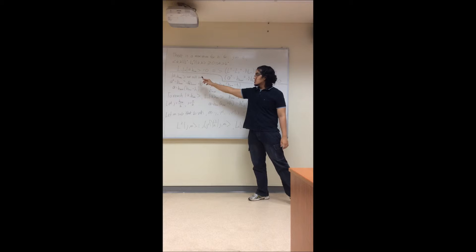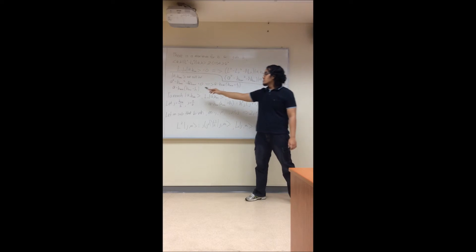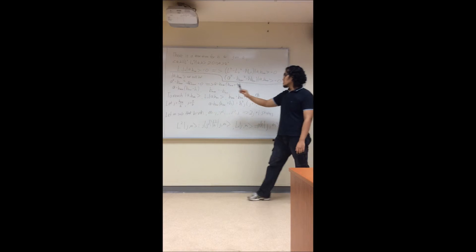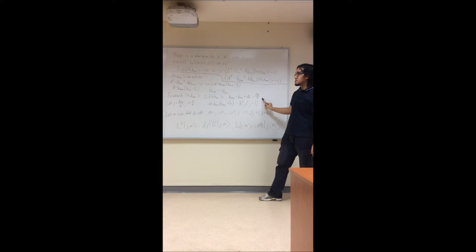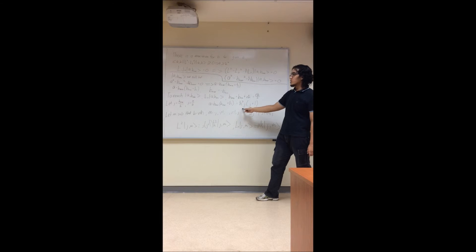Then, since the A B max ket cannot be a null ket, we can express A in terms of B max and B minimum. And in order to reach the B max ket, we will need to use a step-up operator, and then we will get a value for B max. So we let J equal to B max over ℏ, and then we will get a value for A.